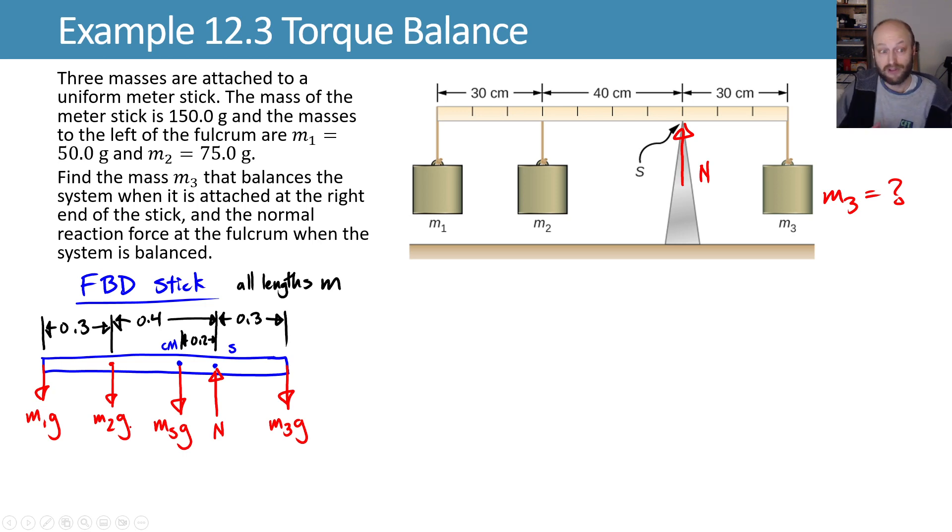With this, we should be able to write our equations of static equilibrium and solve for the unknowns that we want to solve for. I'm going to go ahead and say what they are right here. We want to find n and m3. That's two unknowns. So we'll have to write at least two equations of static equilibrium. Or at least that's what we would expect.